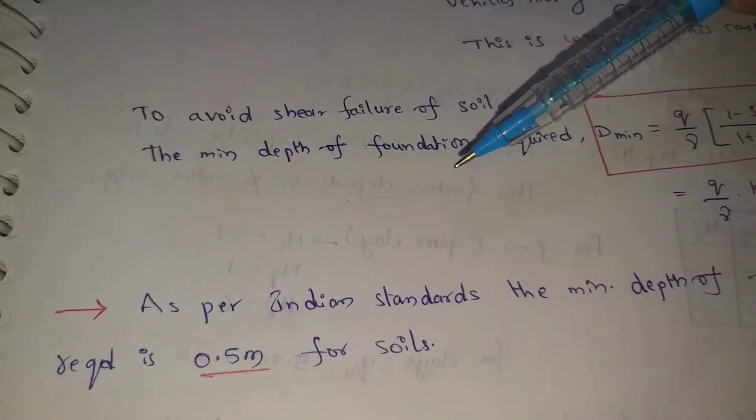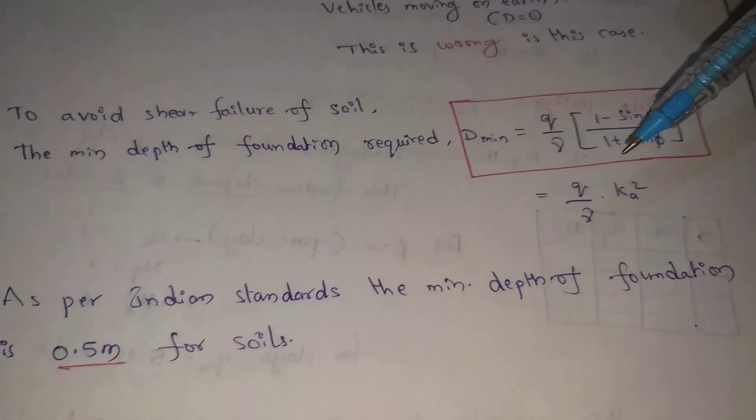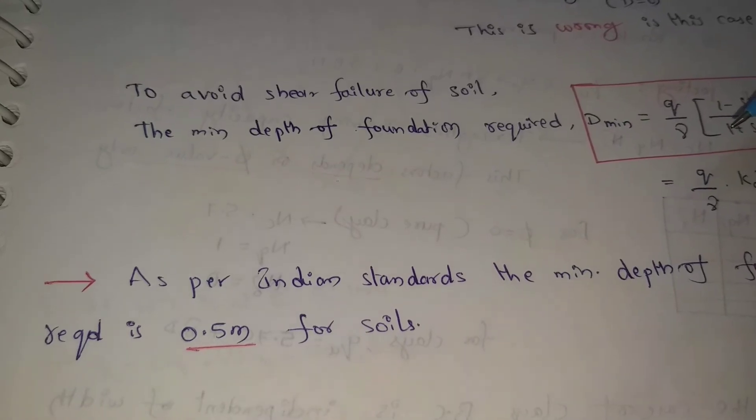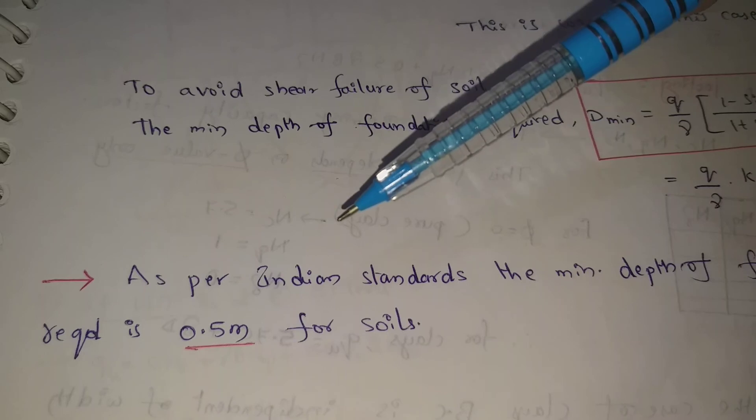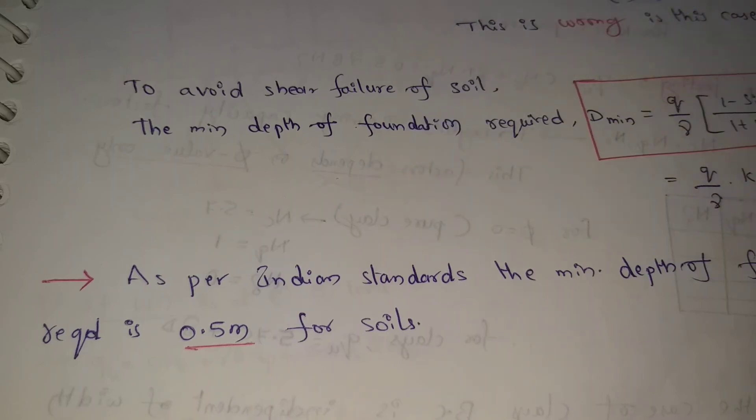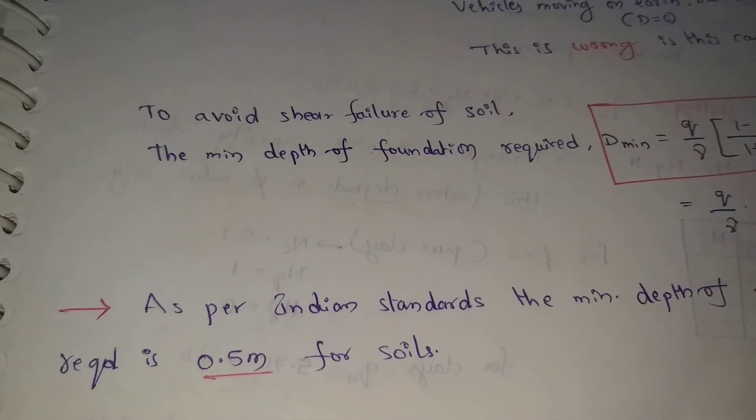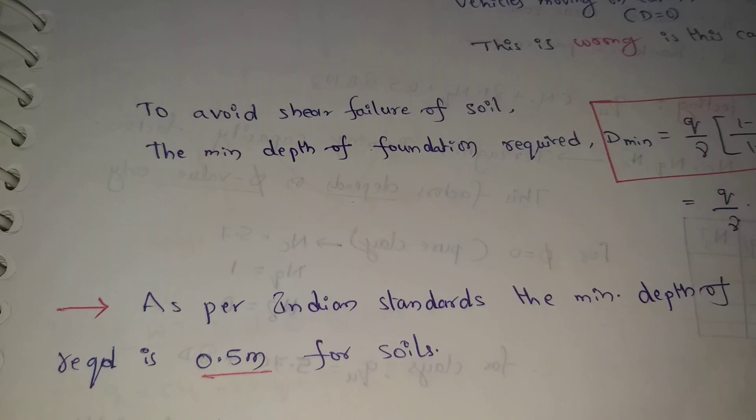As per Indian standards, the minimum depth of foundation required is 0.5 meters for soil. IS standards, foundation minimum depth 0.5 meters. This is Rankine's theory used to find bearing capacity.